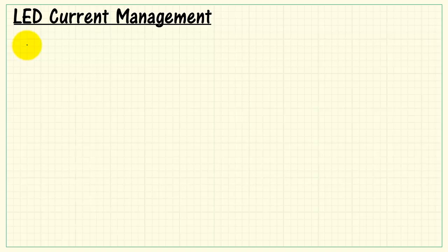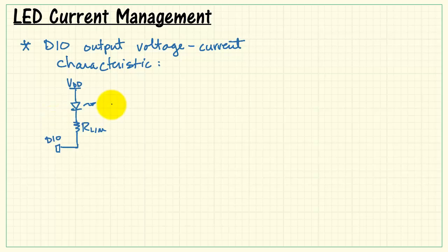Now, I'd like to move on to considering in a little bit more detail what's happening at the DIO in terms of voltage and current. We'll look at the output voltage-current characteristic. This characteristic is a plot of voltage as a function of current. And specifically, the voltage I mean is the voltage between VDD and the DIO output. I'm specifically looking at the case where the output is in the low state which activates the LED.